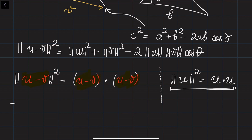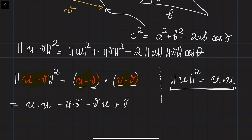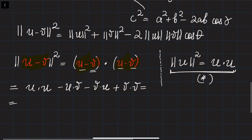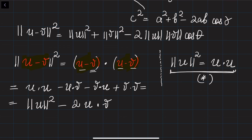Expanding the brackets: (u − v)·(u − v) = u·u − u·v − v·u + v·v. Using the same equation (★), this becomes the norm of u squared minus 2(u·v) plus the norm of v squared, since u·v and v·u are equal.